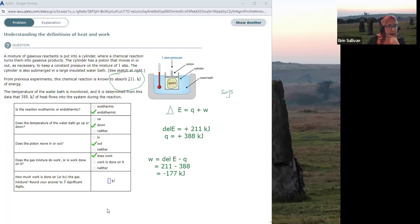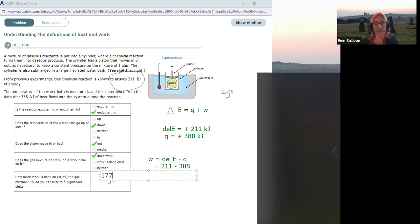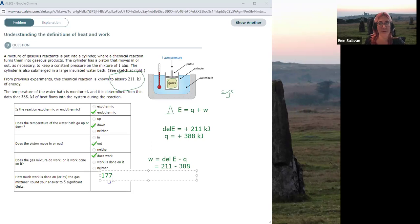So this last question, we've already calculated how much work is done on or by the gas. Now, I believe Alex just wants the numerical value because we've already stated that the gas does work, which implies a negative sign. So that would just be 177 kilojoules.